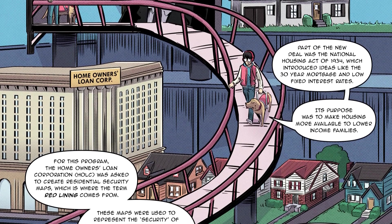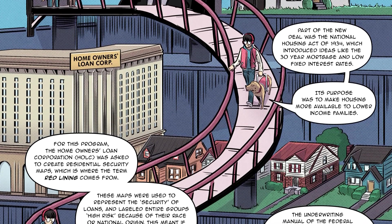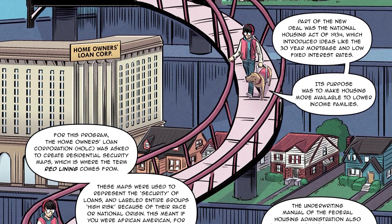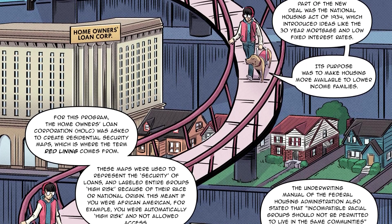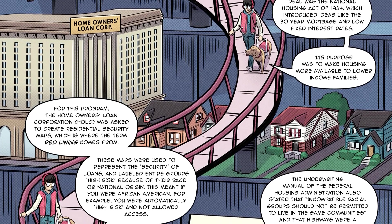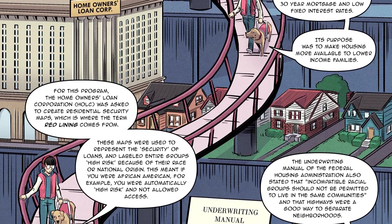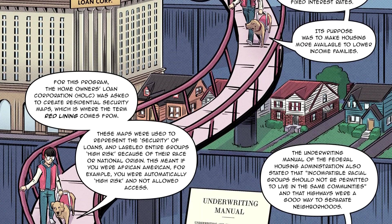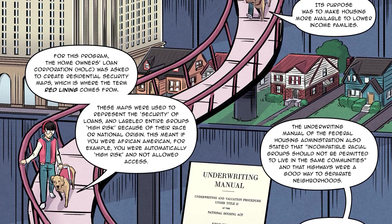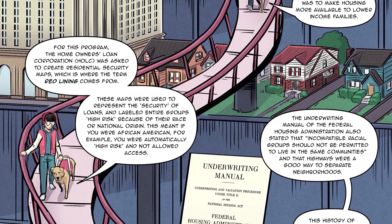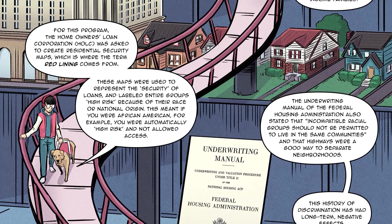For this program, the Homeowners Loan Corporation was asked to create residential security maps, which is where the term redlining comes from. These maps were used to represent the security of loans and labeled entire groups high risk because of their race or national origin.